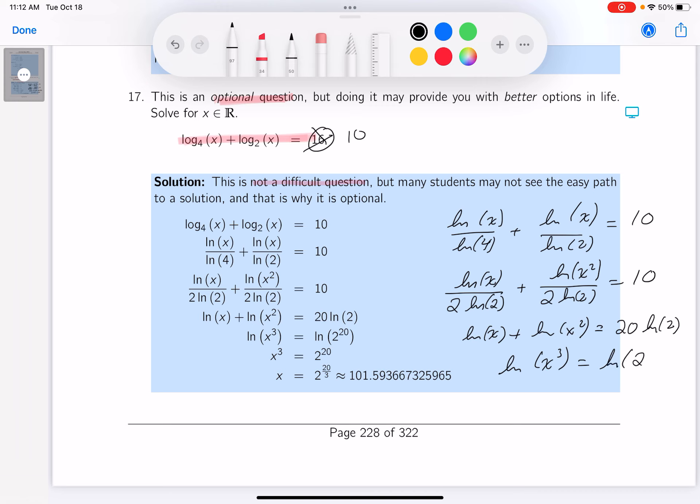x cubed is going to be equal to 2 to the 20th, and then x would equal the cube root, or 2 to the 20/3rds. All right, I'll approximate this number for you, it's about 100. Thank you.